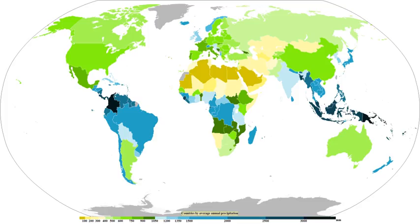There has been an increase in the number of heavy precipitation events over many areas during the past century, as well as an increase since the 1970s in the prevalence of droughts, especially in the tropics and subtropics. Changes in precipitation and evaporation over the oceans are suggested by the decreased salinity of mid- and high-latitude waters, along with increased salinity in lower latitudes, implying less precipitation, more evaporation, or both. Over the contiguous United States, total annual precipitation increased at an average rate of 6.1% per century since 1900, with Hawaii being the only region to show a decrease of 9.25%.